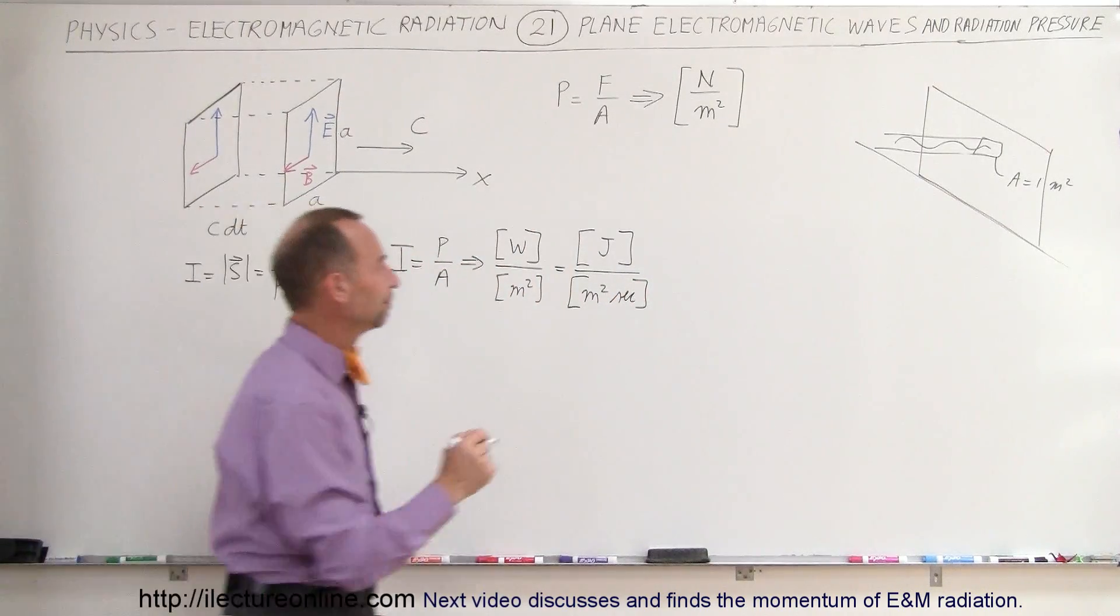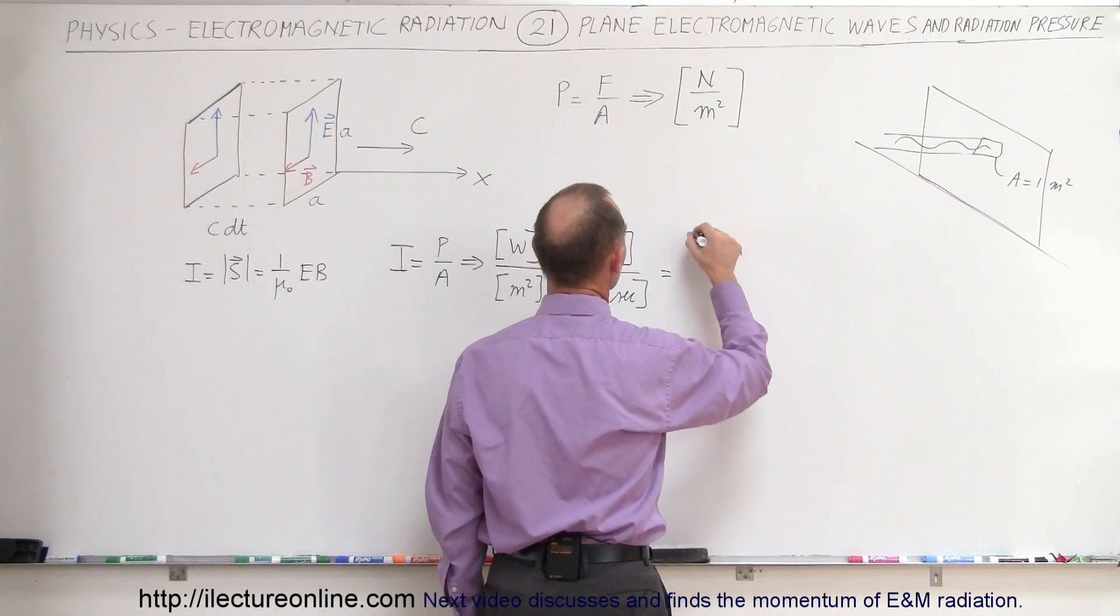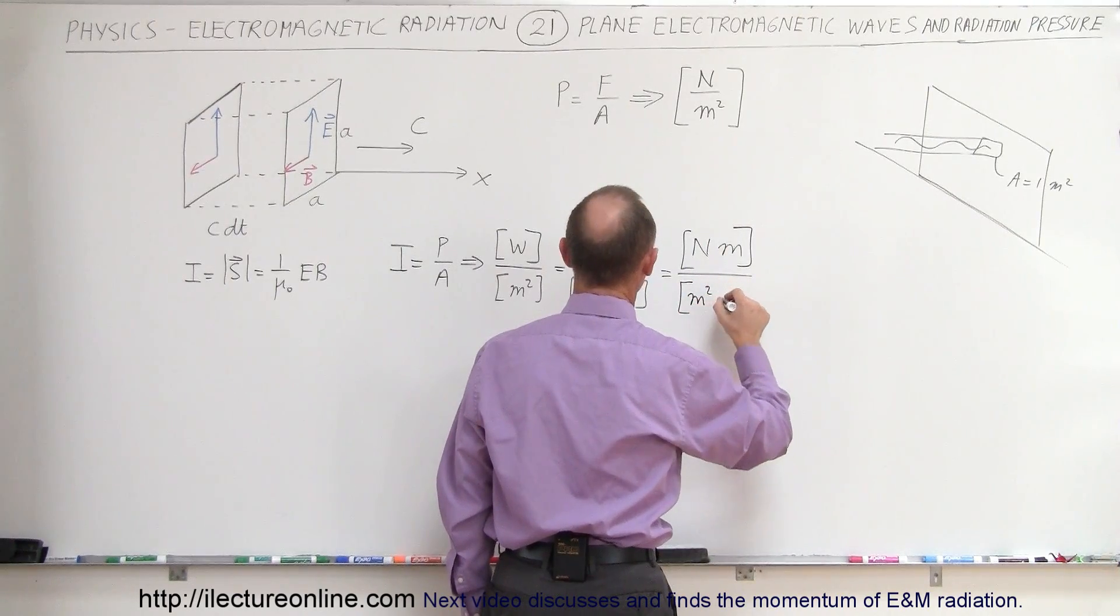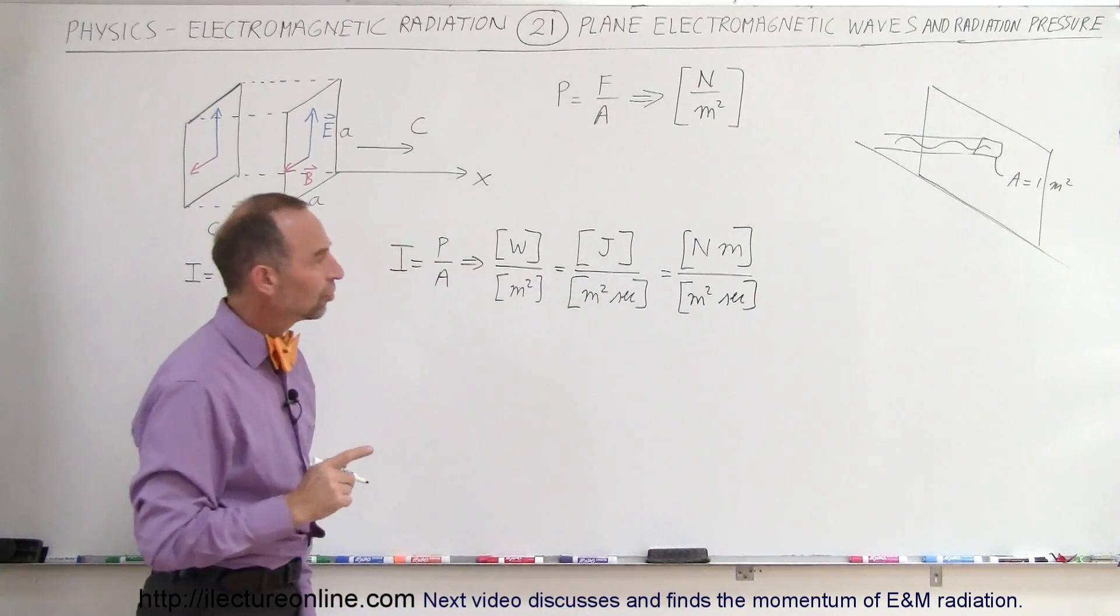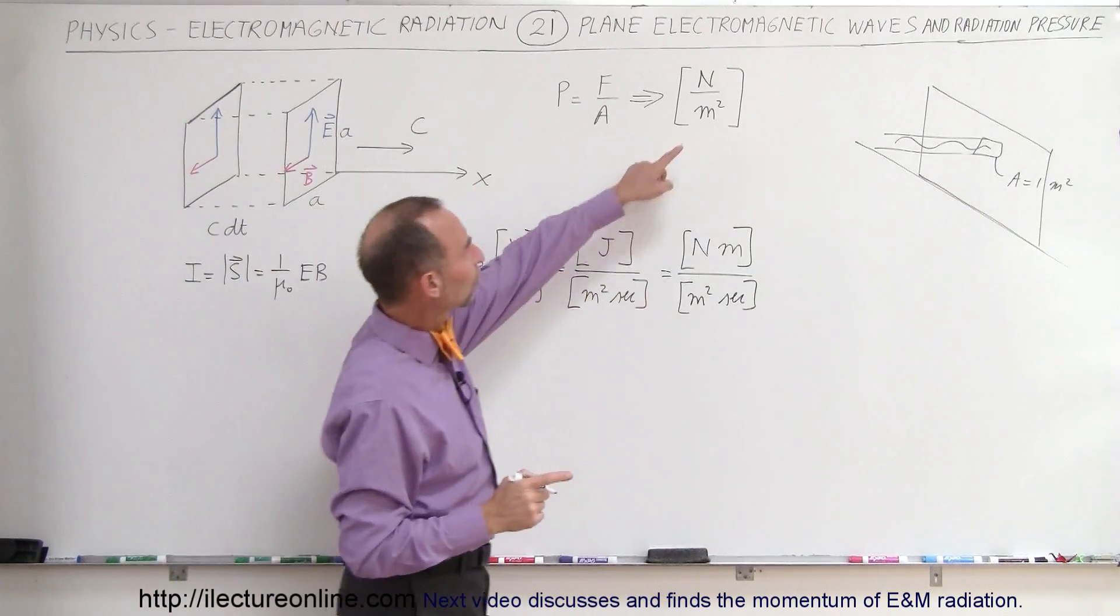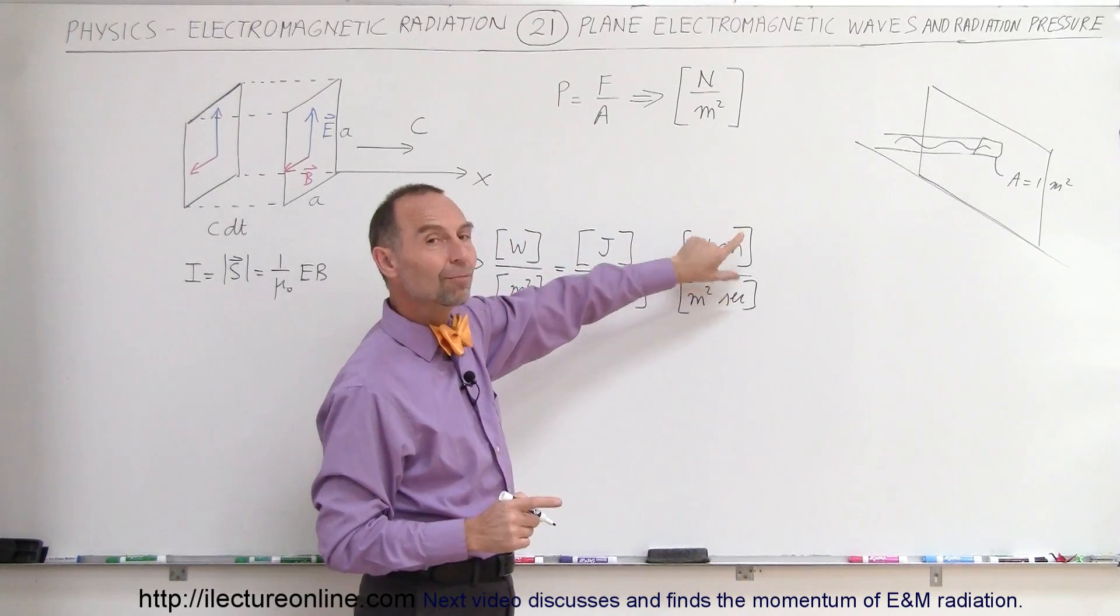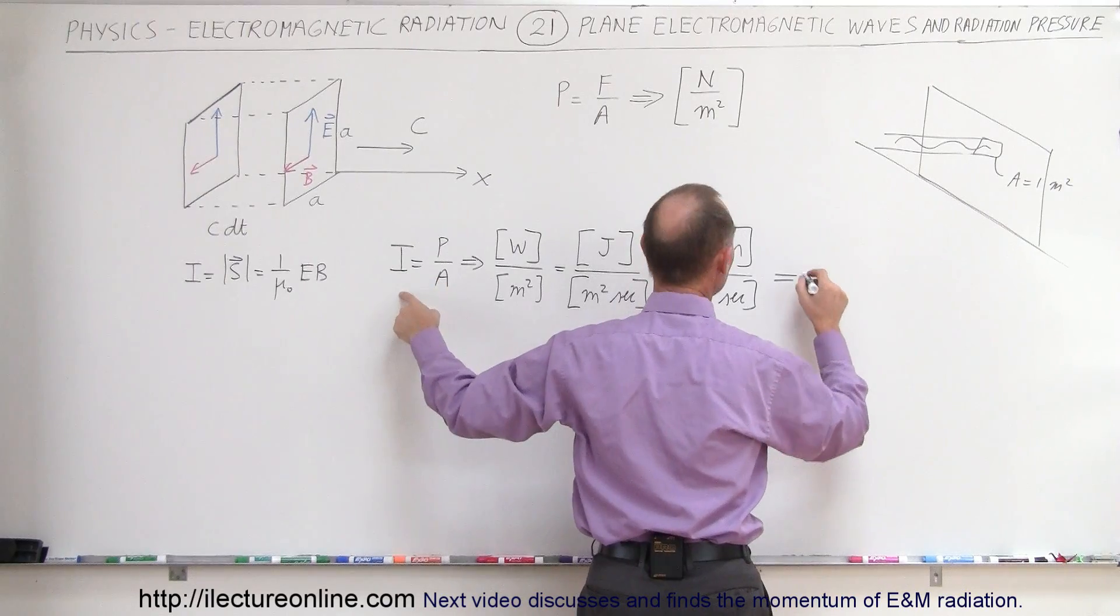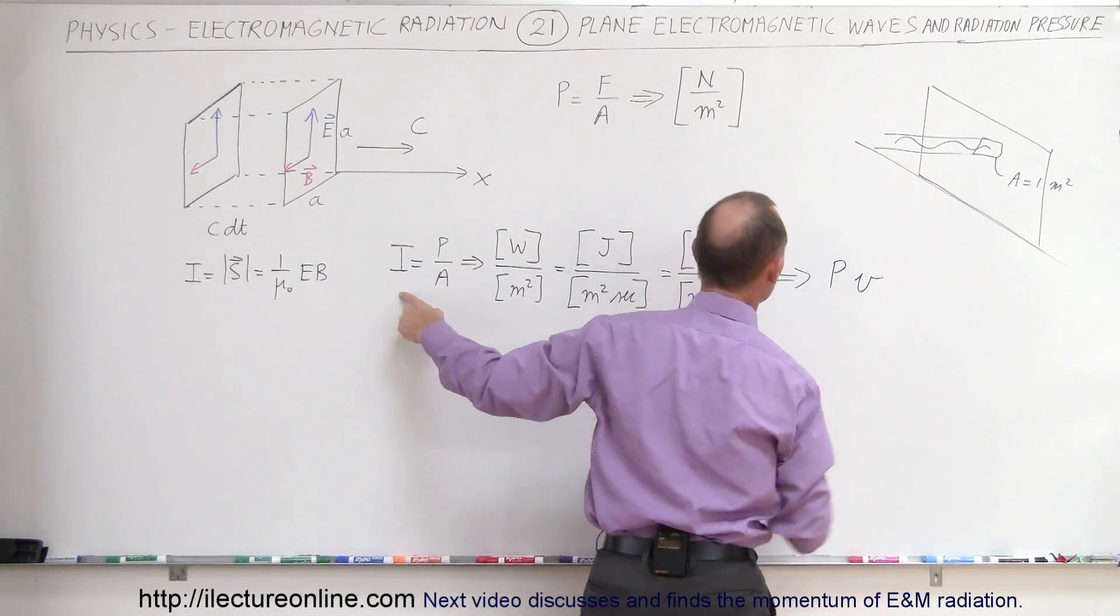A joule is a Newton meter. So this is equal to a Newton times meter divided by meters squared times seconds. Notice that Newton per meter squared is what we have over here. That's the unit of pressure. So pressure times meters per second, which is velocity. That means that intensity is really pressure times velocity.